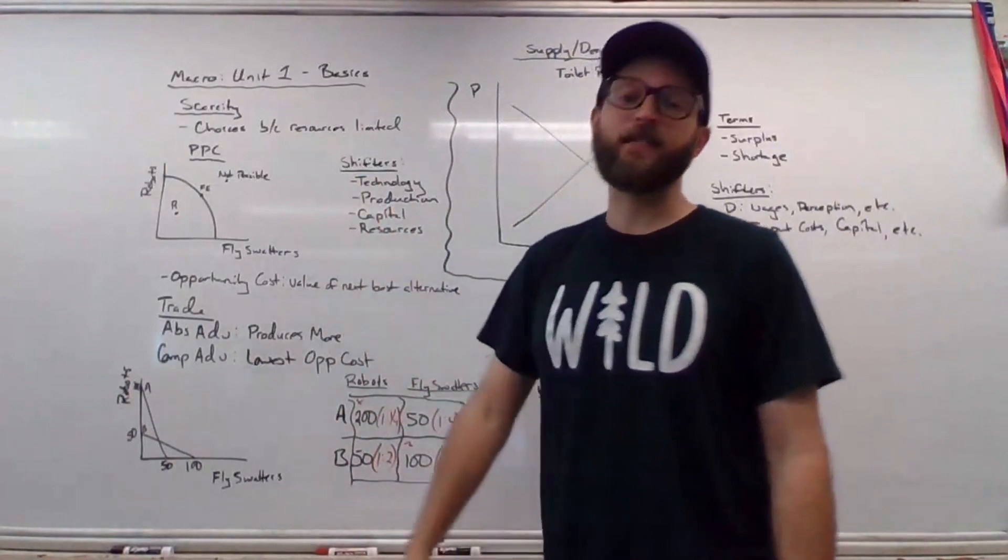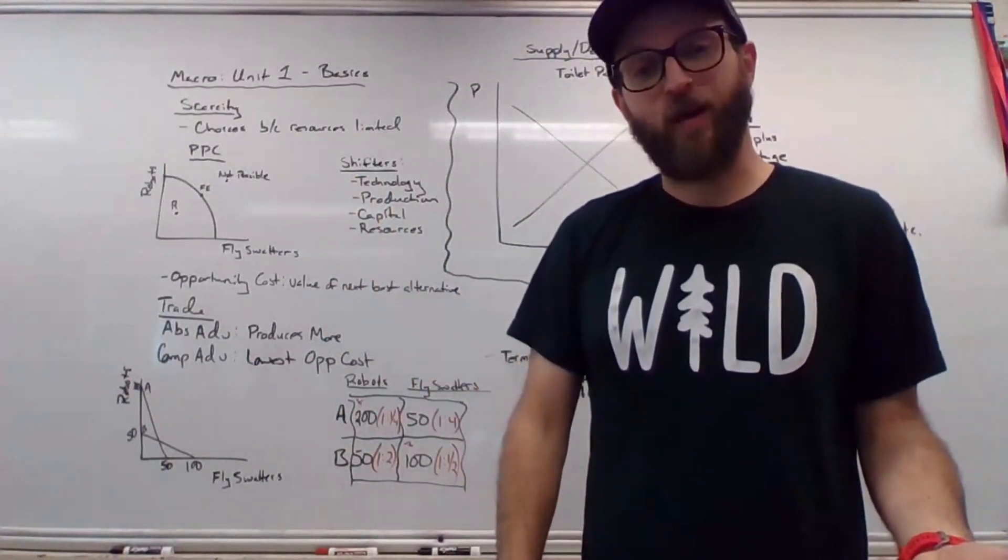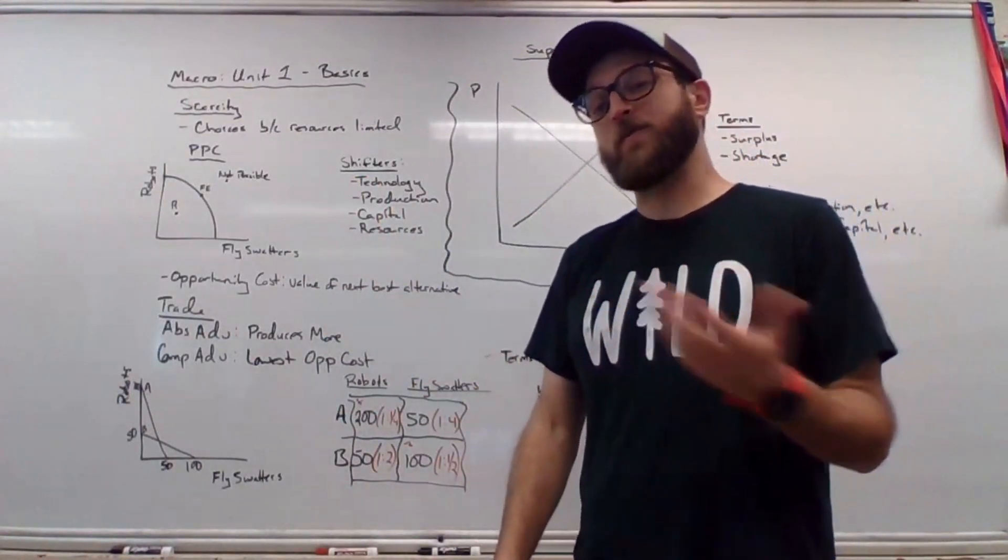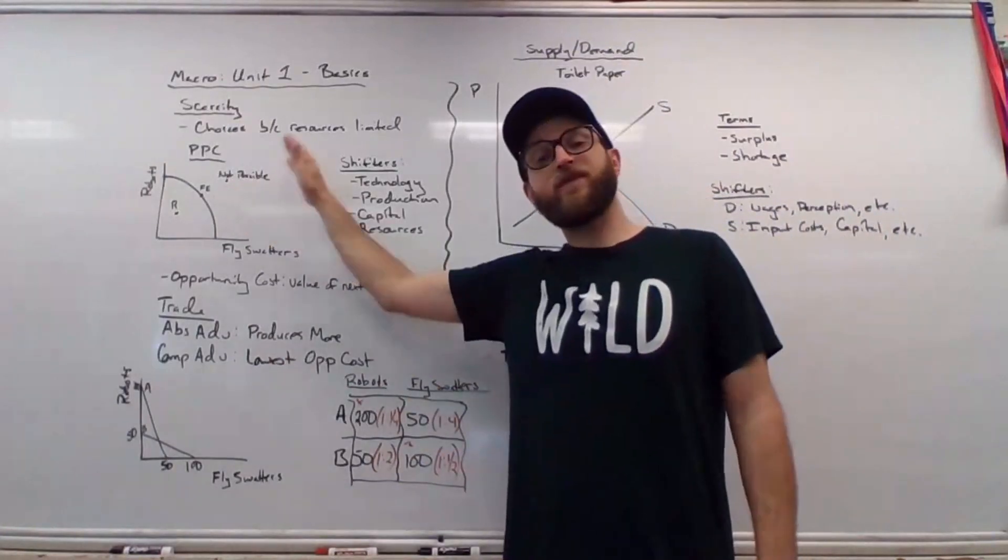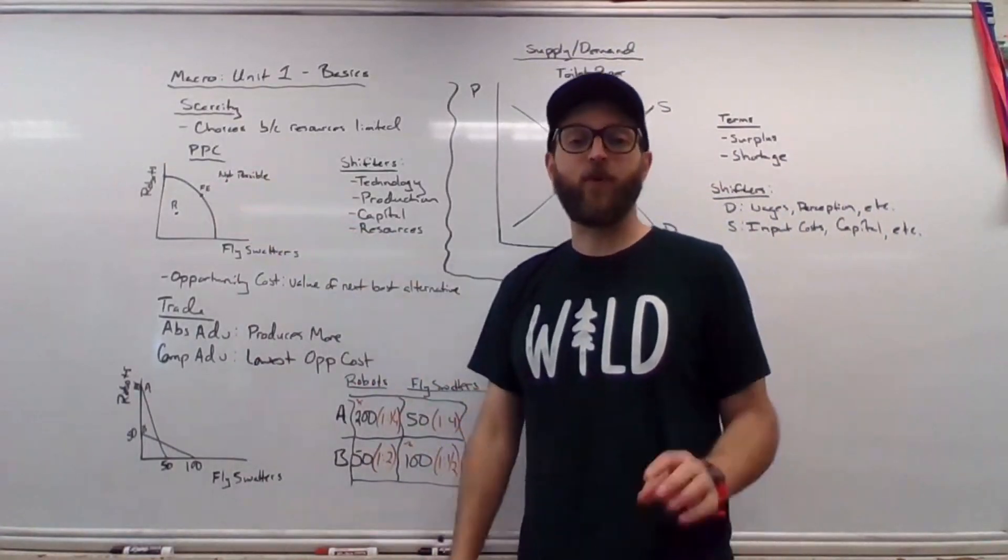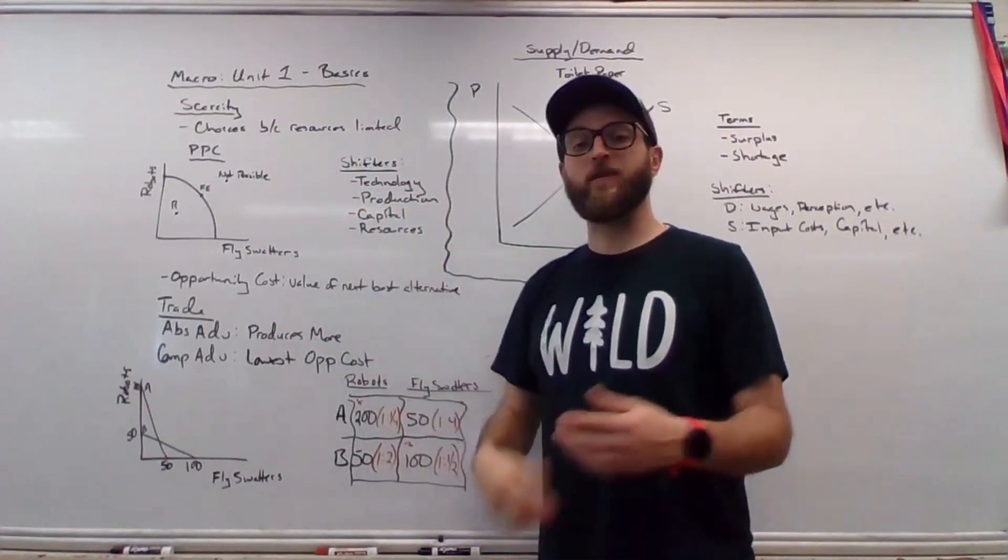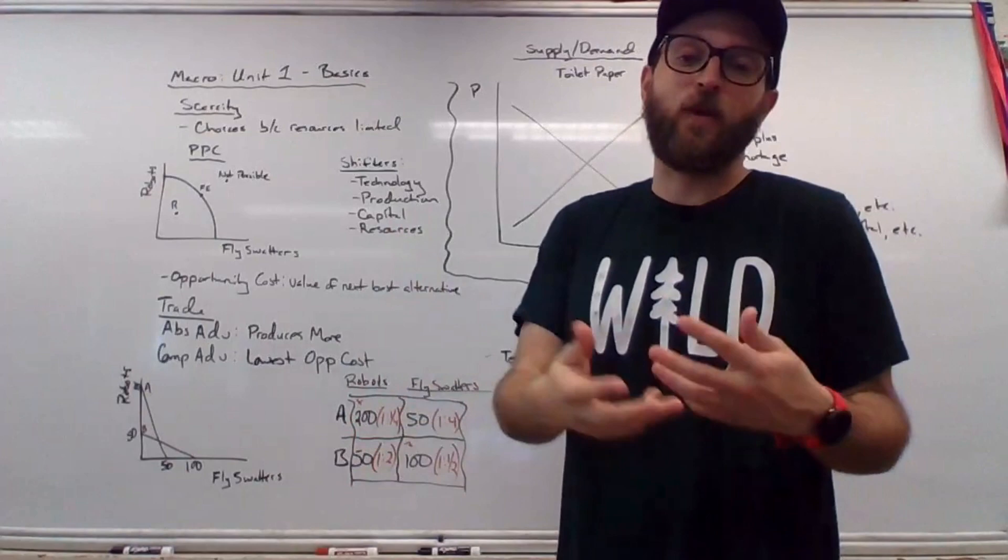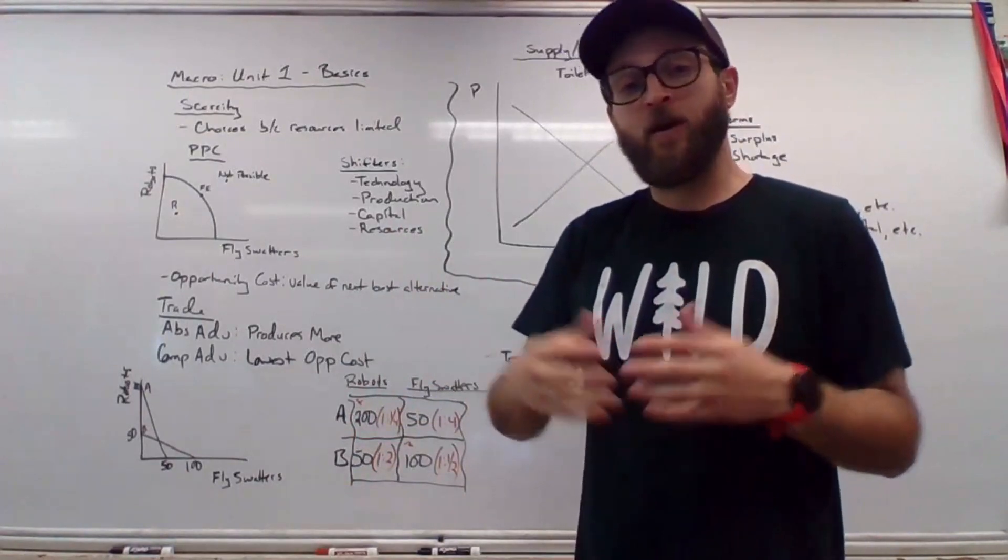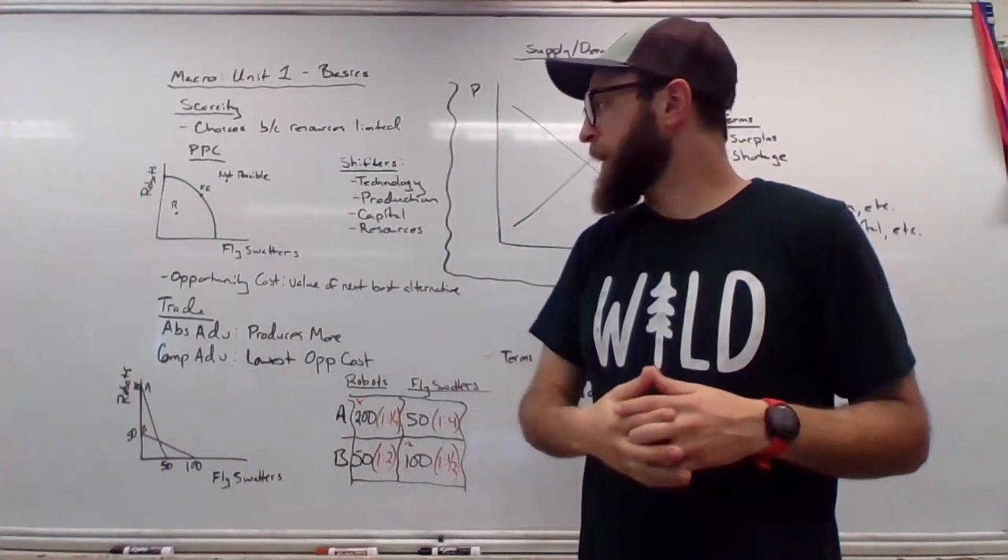Shifters are pretty nicely correlated to the long-run aggregate supply line. So things which affect permanent economic growth would actually shift this line instead of moving the point along it. Technology, production, capital, and resources. Remember, capital is anything we use to make something that creates wealth. So a machine or your knowledge, for example, would be human capital.